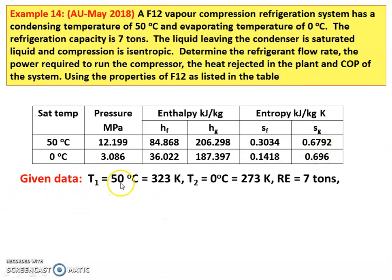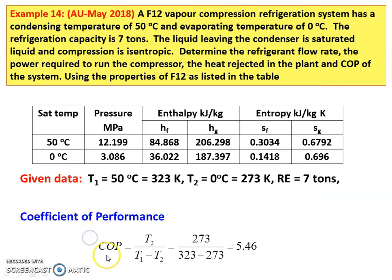Given data: T1 equals 50 degree Celsius, the condensing temperature, which is 323 Kelvin. T2 equals 0 degree Celsius, the evaporating temperature, which is 273 Kelvin. Refrigeration effect equals 7 tons. COP equals T2 divided by T1 minus T2: 273 divided by (323 minus 273) equals 5.46.